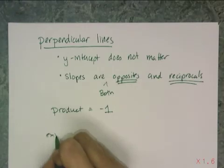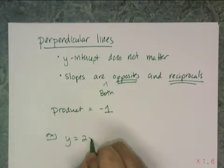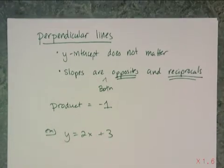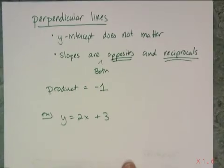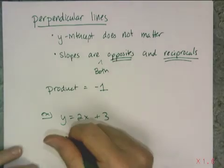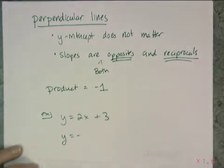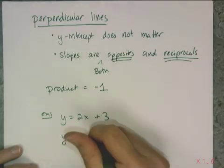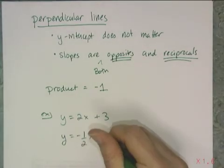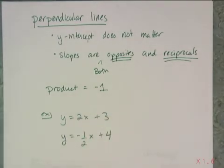For example, y equals 2x plus 3. If I want to write the equation of a line perpendicular to y equals 2x plus 3, remember the y-intercepts don't matter. All I care about is the slope. It's got to be the opposite, which is negative in this case, and the reciprocal, which in this case is a half. Then I just tack on some y-intercept, and I have an equation of a line that is perpendicular.